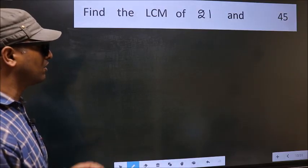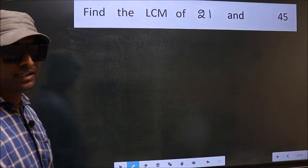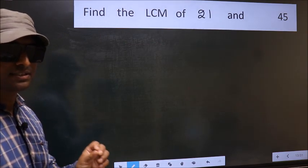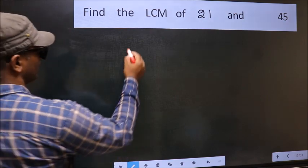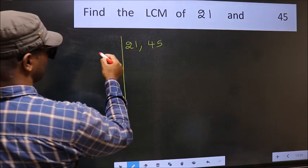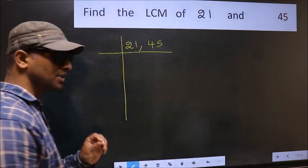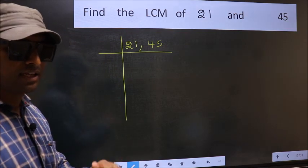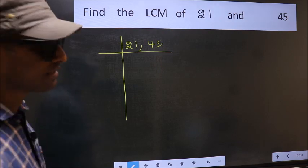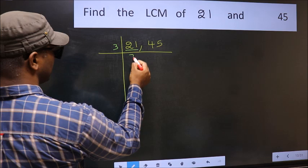Find the LCM of 21 and 45. To find the LCM, we should frame it in this way — write 21 and 45. This is step 1. Now focus on the first number, which is 21. 21 is 3 sevens, that is 21.